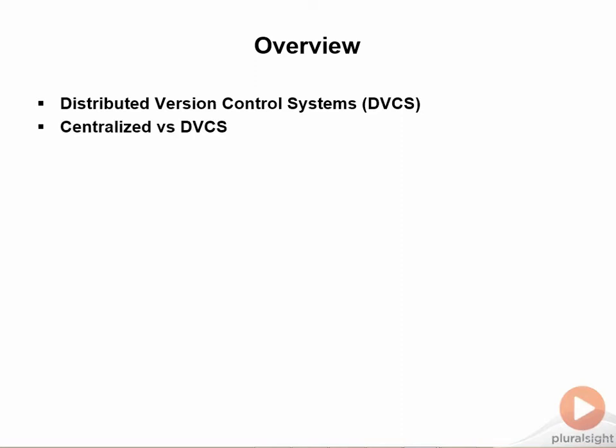Before we dive into Git and its features, it is important to understand how a DVCS differs from the version control systems that you are probably used to. We also need to understand the process or workflow used by the different version control models. We're going to take a look at different source control models that you may be used to while working with Visual Studio, and finally, we will take a look at how Git and other distributed version control systems operate.